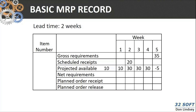In period 5 we see a gross requirement of 35, which means we have a negative projected available. A negative projected available means we have a net requirement — we need to plan an order and offset it by lead time. MRP assumes you're going to do what it says, so you release that order in period 3. It comes into inventory and your new projected available at the end of period 5 is 0. That's the basic flow of an MRP record.